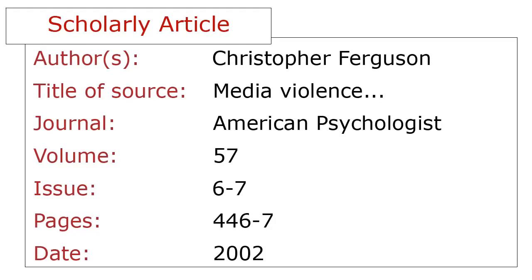For a scholarly journal article, you'll need the author of the article and the title of the article. You'll also need the title of the journal the article is published in, the volume, the issue, and the date. You'll need the location of the article, or the pages. The same information is required for articles whether they're found in print or online. Don't list the database you found the article in, like ProQuest.